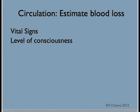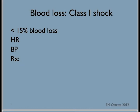There are four classes of hemorrhagic shock. If the patient has lost less than 15% of their blood volume, the only vital sign difference you see is an elevated heart rate. The blood pressure should still be the same. In terms of treatment, the patient should only need crystalloid fluid until the heart rate normalizes — either normal saline or Ringer's lactate.